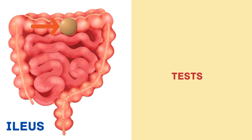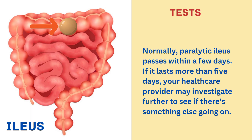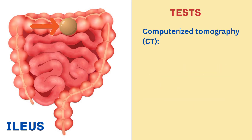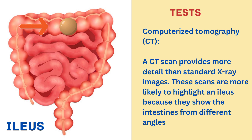Now let us discuss the tests. Normally, paralytic ileus passes within a few days. If it lasts more than 5 days, your healthcare provider may investigate further. The first test is the X-ray. An abdominal X-ray may show some obstructions, but they do not always identify ileus or other intestinal problems. The next test is a CT scan, that is computerized tomography. A CT scan provides more detail than standard X-ray images and is more likely to highlight an ileus because it shows the intestines from different angles.